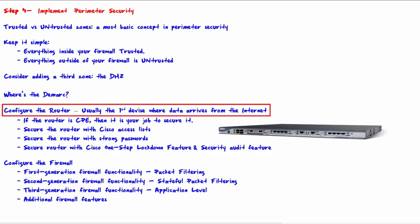The router is the first device where data arrives from the internet. If a packet from the untrusted network to the trusted network arrives, usually the first device it hits is the router at the perimeter. Depending upon the type of internet connection — whether it's T1, cable, etc. — the router may be CPE or it may be owned by the ISP. If the router is CPE, then it is your job to secure it.